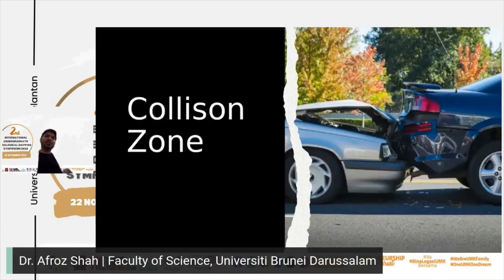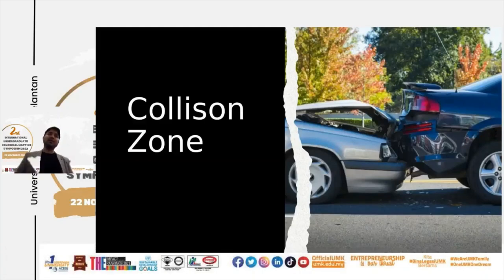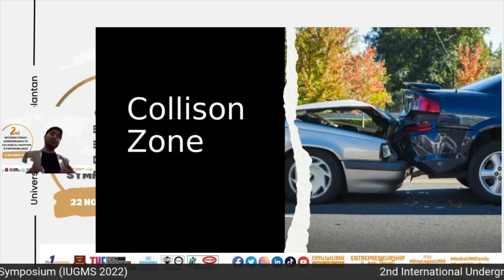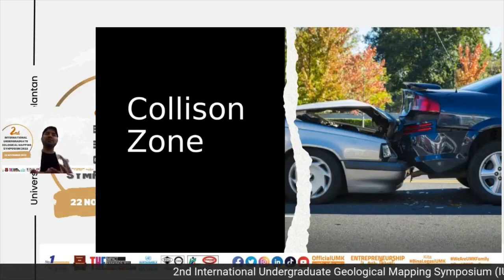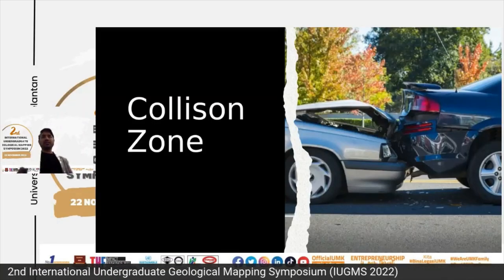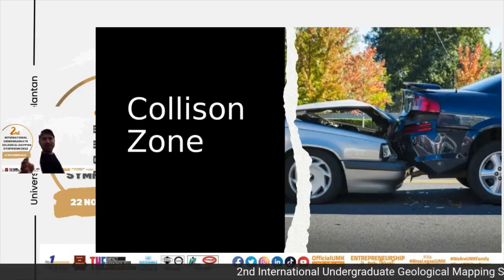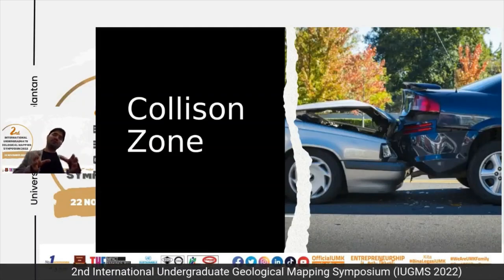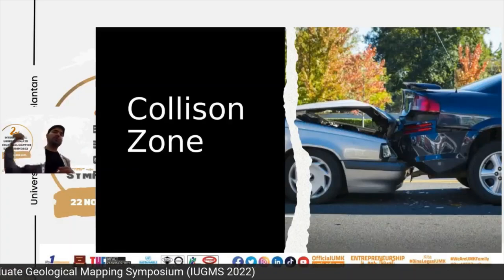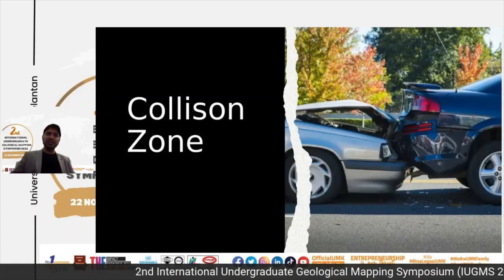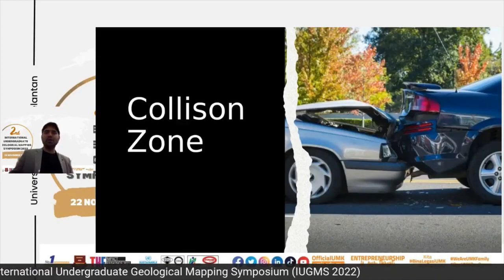Look here — this is a collision zone. When the cars collide, you form structures. On the left side, you can see the car has been folded. Collision zones are like that: two continents coming together forming structures. The strength matters — one car can be stronger than the other. If one car is stronger, you know which will have more damage. The stronger one will obviously have less damage and most damage goes to the weaker one.